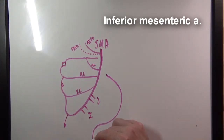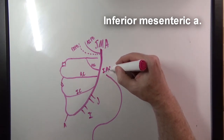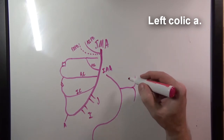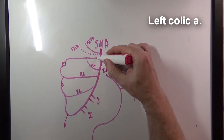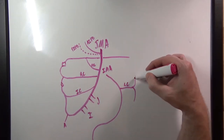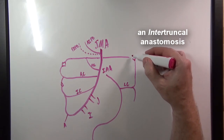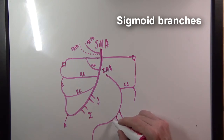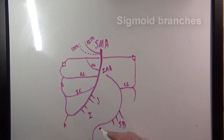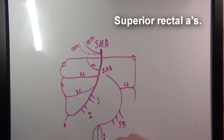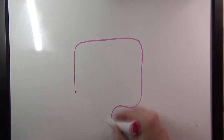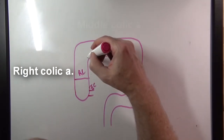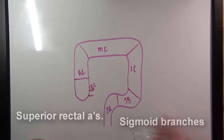Now drawing the inferior mesenteric artery, which has several branches. The left colic artery supplies blood to the descending colon and anastomoses with the middle colic artery. The sigmoid branches supply blood to the sigmoid colon. The superior rectal arteries supply the rectum. Together — ileocolic, right colic, middle colic, left colic, sigmoid branches, and superior rectal arteries — these cover the entire colon.